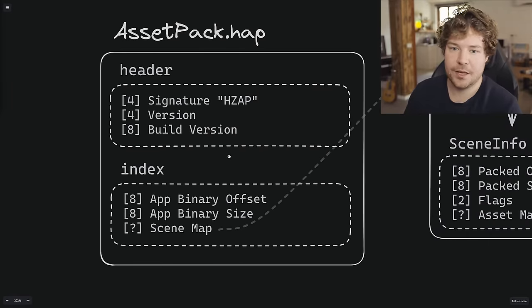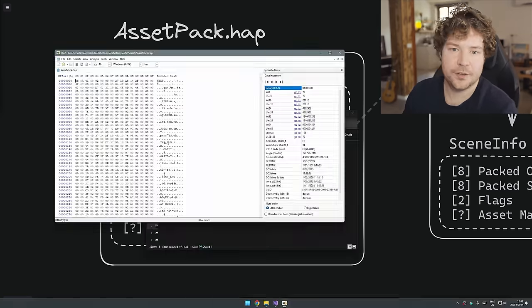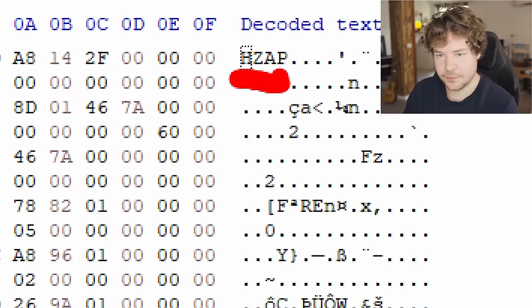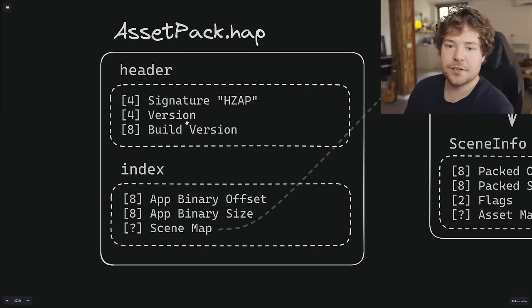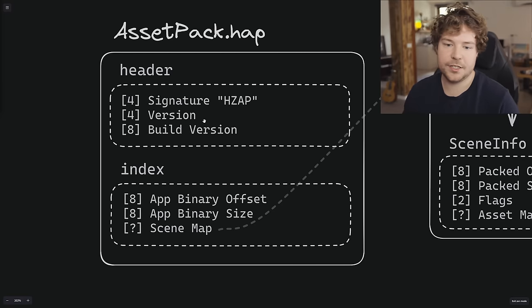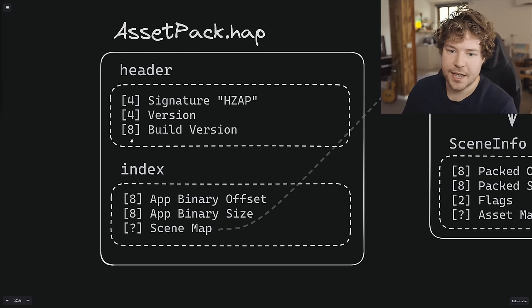So how does the file format work? I've created a diagram. The assetpack.hap file starts with a 16-byte header. The first four bytes are 'HZAP' — literally those letters, which you can see right there in HxD. That's there simply so we know what the file format is: a quick way to validate whether someone has a valid Hazel asset pack file. Next we have a version — the version of the actual format — which is important because if we ever change the layout, we need to know what version a particular file is so we can decode it correctly.